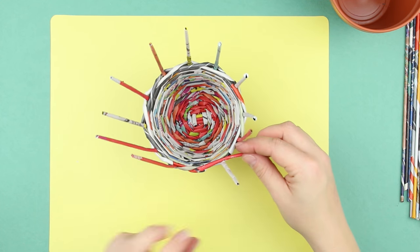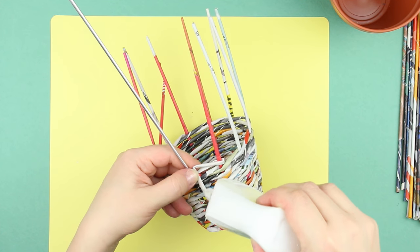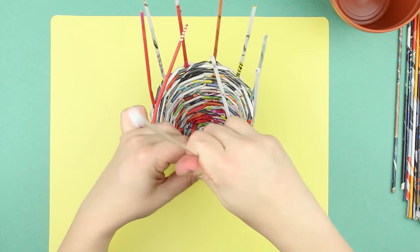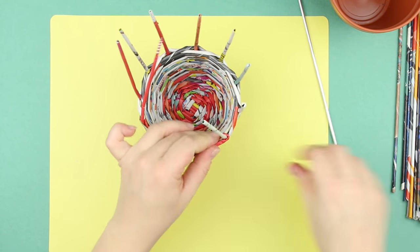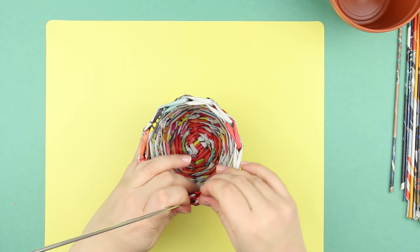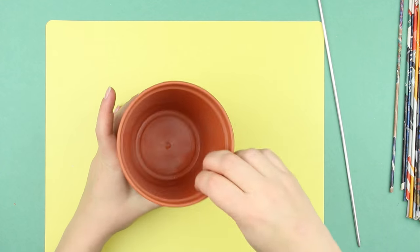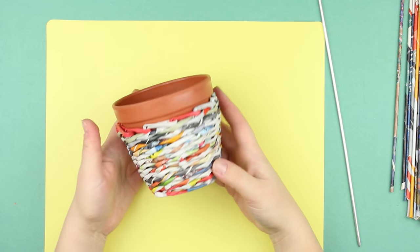Bend the stands to complete the edge in the same way you did when making the wheels. The woven flower pot is ready. We can make a bicycle.